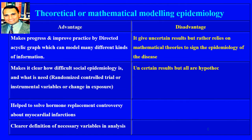Comparing theoretical or mathematical modeling epidemiology, its advantages include making progress and improving practice through directed acyclic graphs, which can model many different kinds of information including infectious diseases. It clarifies how difficult social epidemiology is, what is needed in randomized control trials, instrumental variables, and clear definition of necessary variables in analysis. It helped solve the hormone replacement controversy about myocardial infarctions. Disadvantages include uncertain results, relying on mathematical theories, and all outcomes are hypothetical.